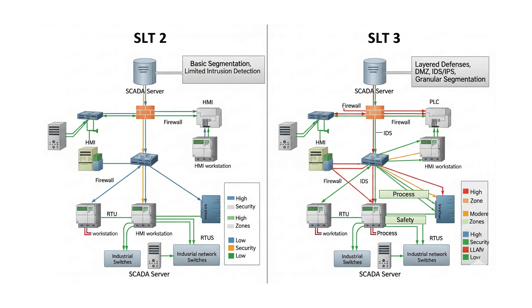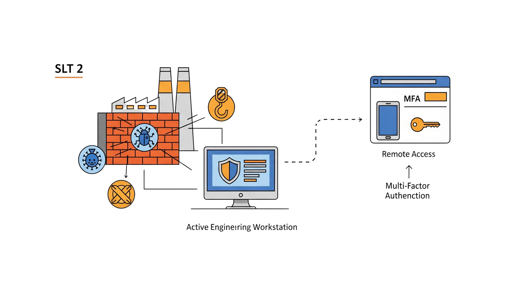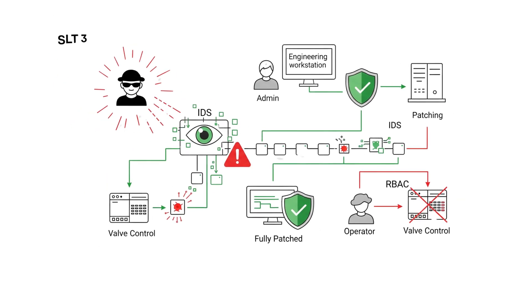Let's take an industrial control system (ICS) network as an example to show how SLT 2 and SLT 3 differ in implementation. At SLT 2, a factory installs firewalls to block unauthorized traffic, uses antivirus on engineering workstations, and requires MFA for remote access — protecting against basic malware and phishing. At SLT 3, the same factory adds intrusion detection systems (IDS) to monitor network traffic, enforces regular security patching, and implements role-based access control (RBAC) to limit who can make critical changes, defending against more sophisticated targeted cyber attacks.